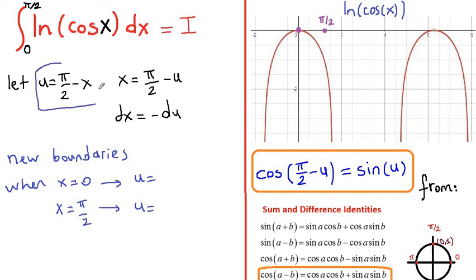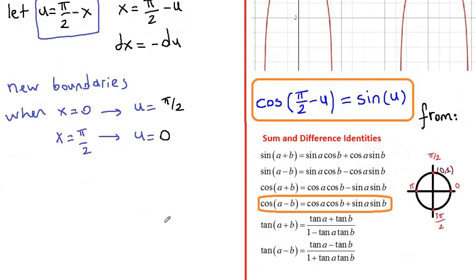In this equation, when x equals to 0, u equals to pi over 2. And when x equals to pi over 2, u equals to 0. So our new boundaries are from pi over 2 to 0 — lower boundary, upper boundary.